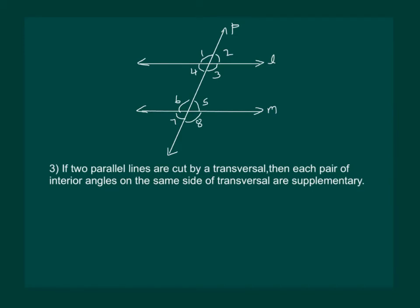And the third rule is that if two parallel lines are cut by a transversal then each pair of interior angles on the same side of the transversal are supplementary. That would mean that angle 4 plus angle 6 will be equal to 180 degrees. Similarly angle 3 plus angle 5 will be supplementary.